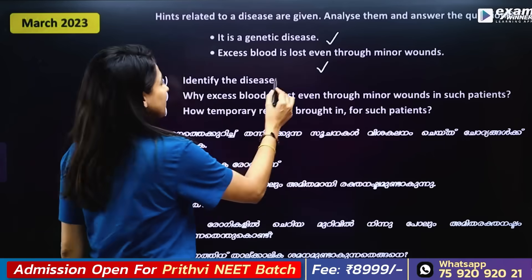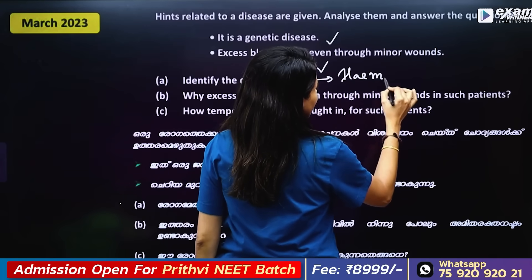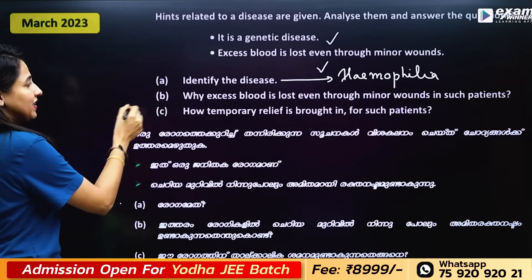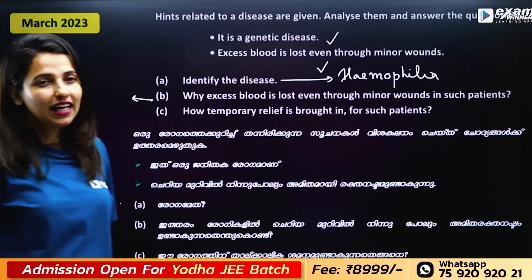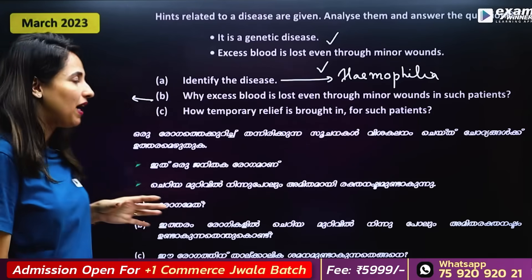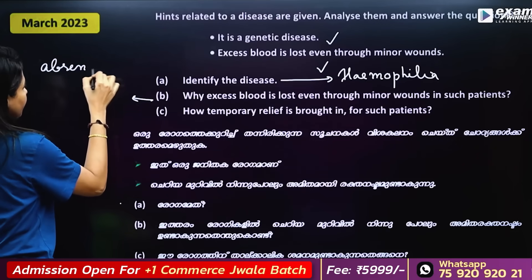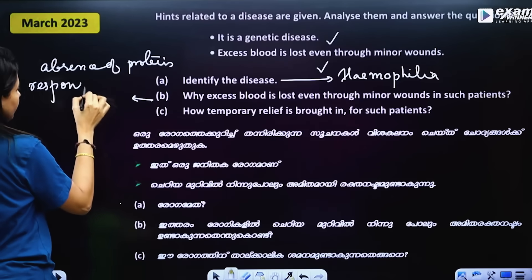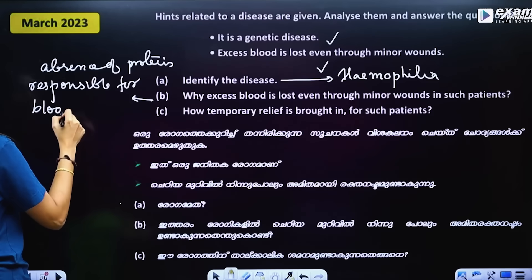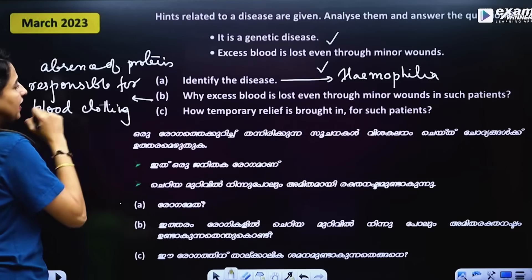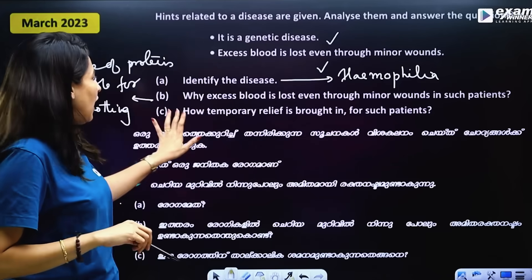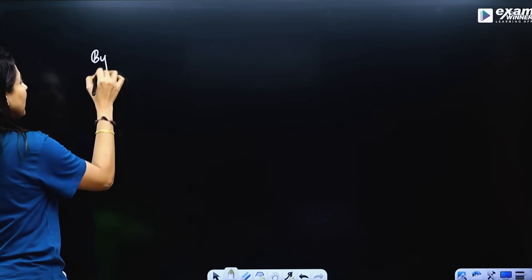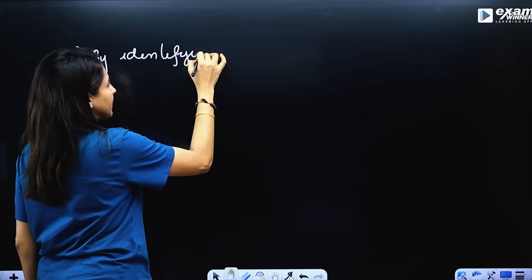This is a genetic disease where excess blood is lost even through minor wounds, because there is an absence of protein responsible for blood clotting.